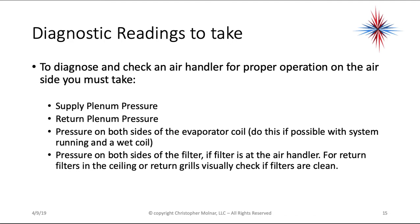To diagnose and check an air handler for proper operation on the air side, you must take supply plenum pressure, return plenum pressure, and pressure on both sides of the evaporator coil — try to do this with the system running and a wet coil. Also take pressure on both sides of the filter if it's in the air handler. For return filters in the ceiling or return grills, you may not be able to get a filter static pressure reading, so visually check them, and make sure the homeowner has not installed high-restriction 3M filters, because they are too restrictive and will cause problems.